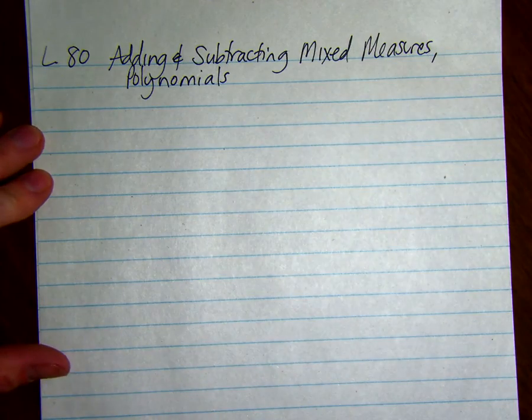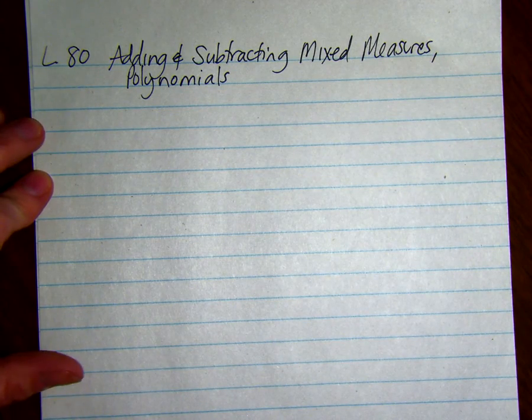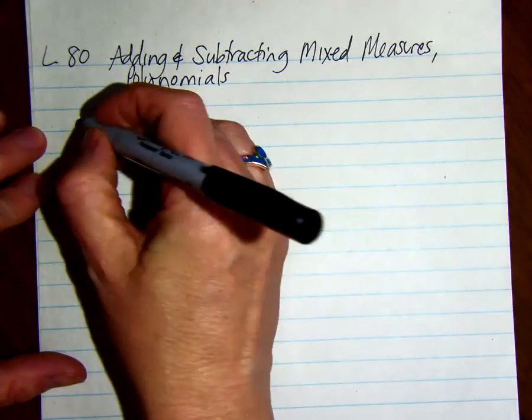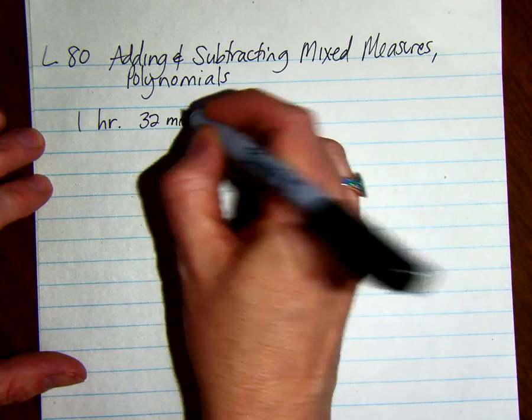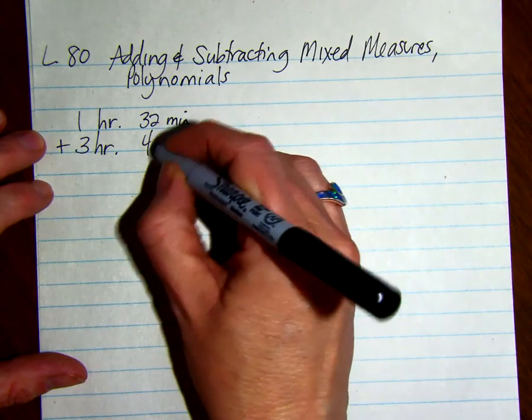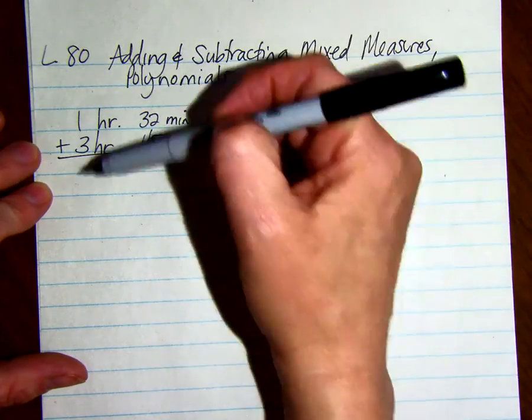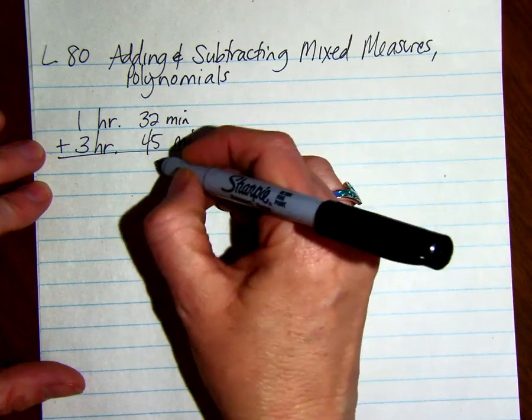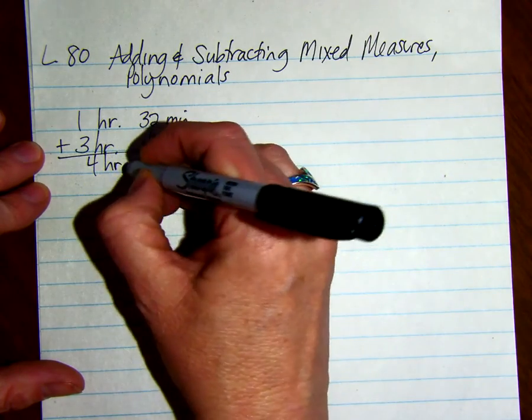Mixed measures is a lot like hours and minutes or pounds and ounces. If we wanted to add 1 hour and 32 minutes with 3 hours and 45 minutes, when you're adding you just add straight down. So we're going to have 77 minutes and 4 hours.